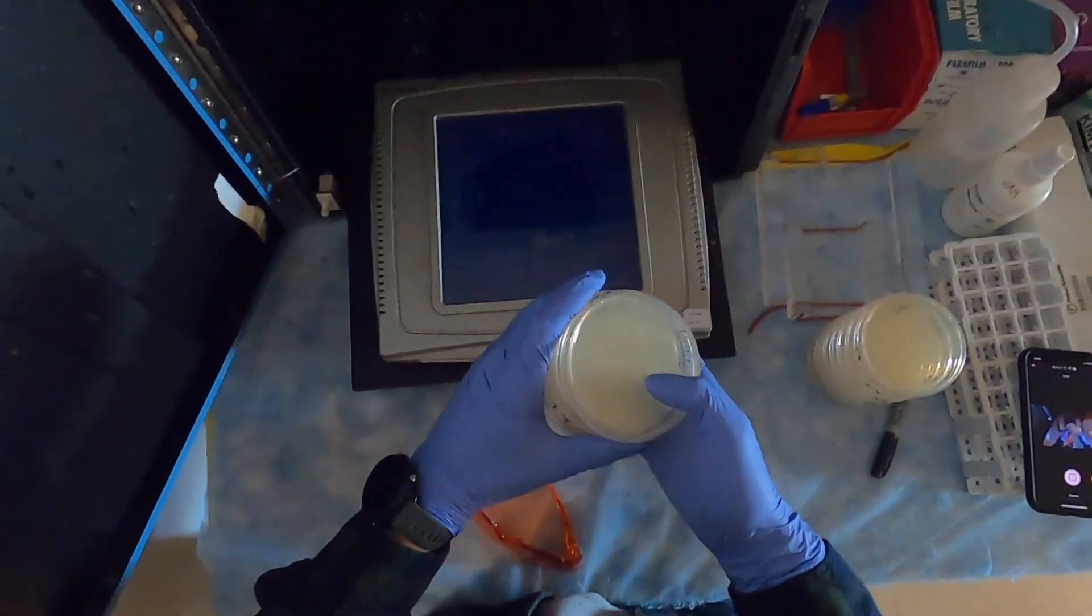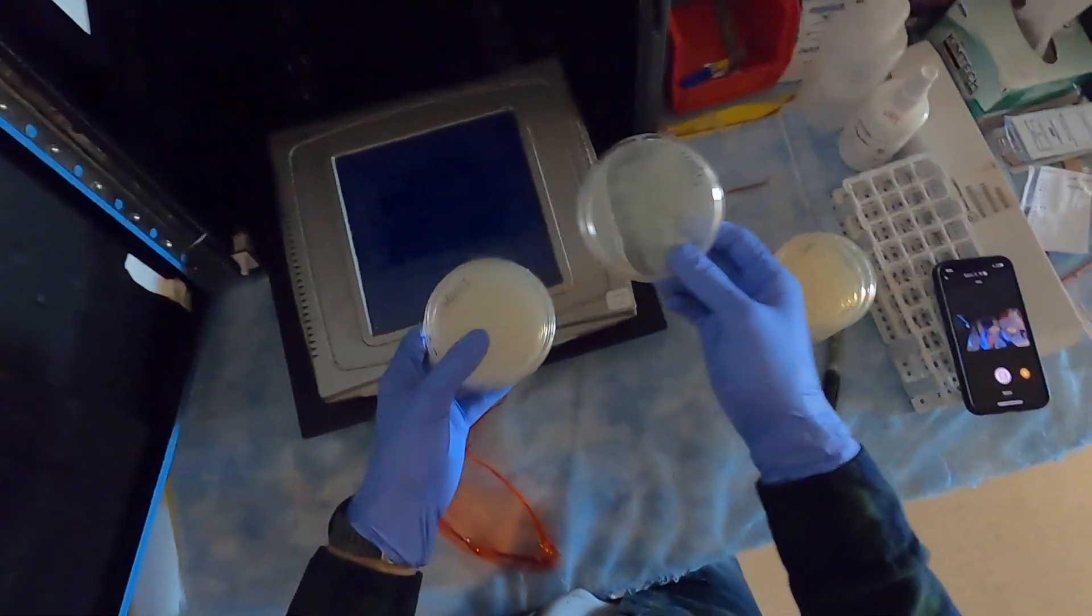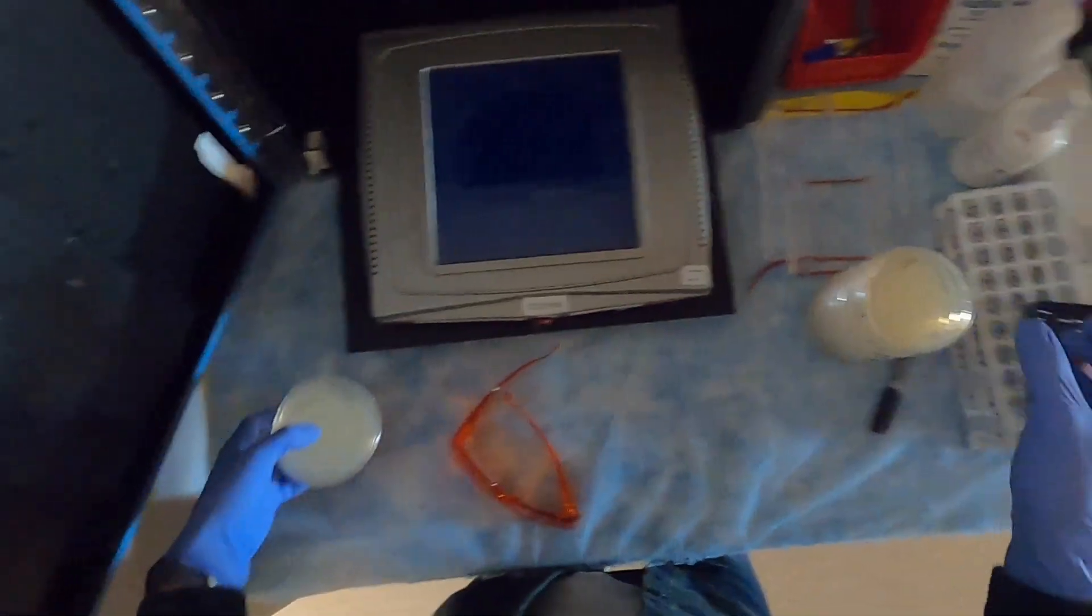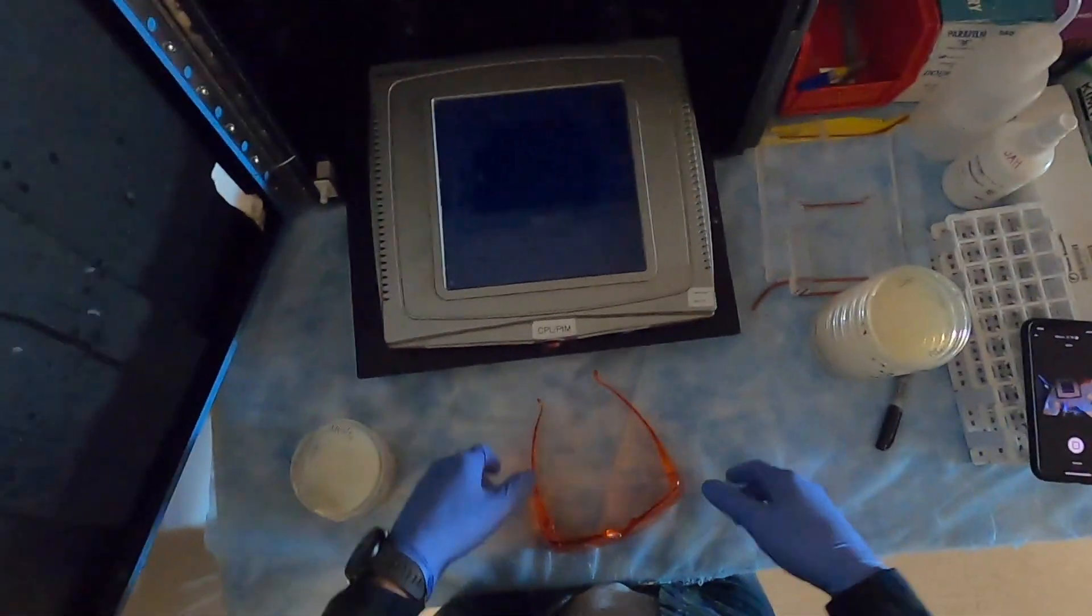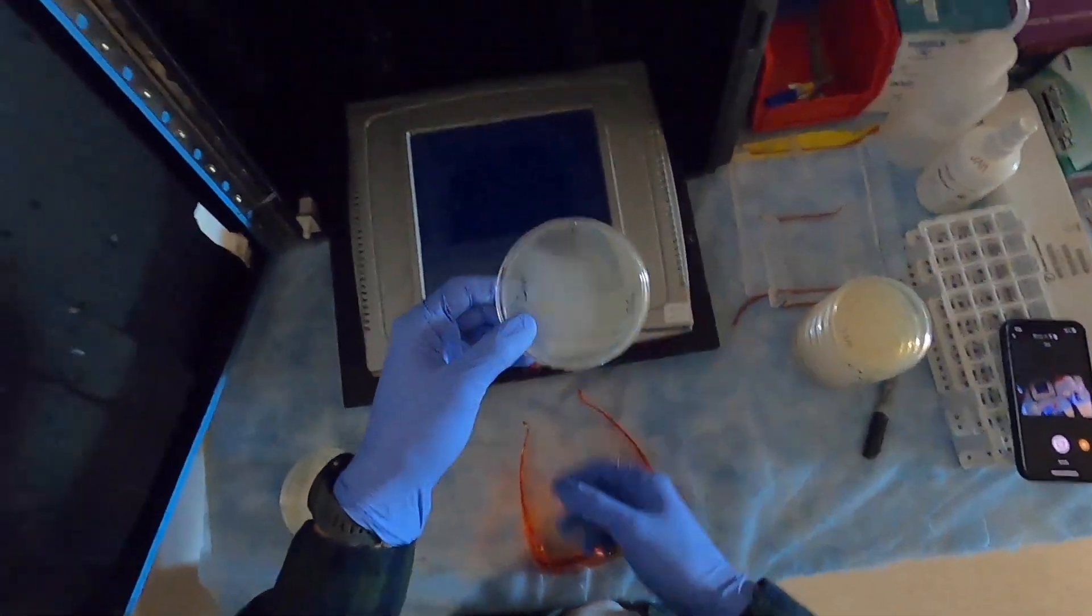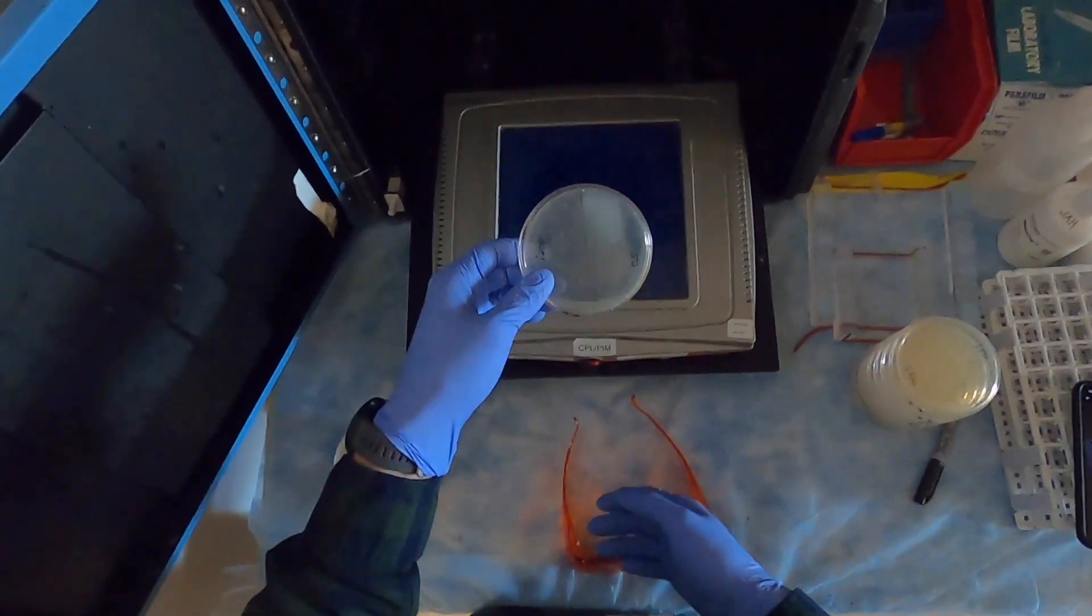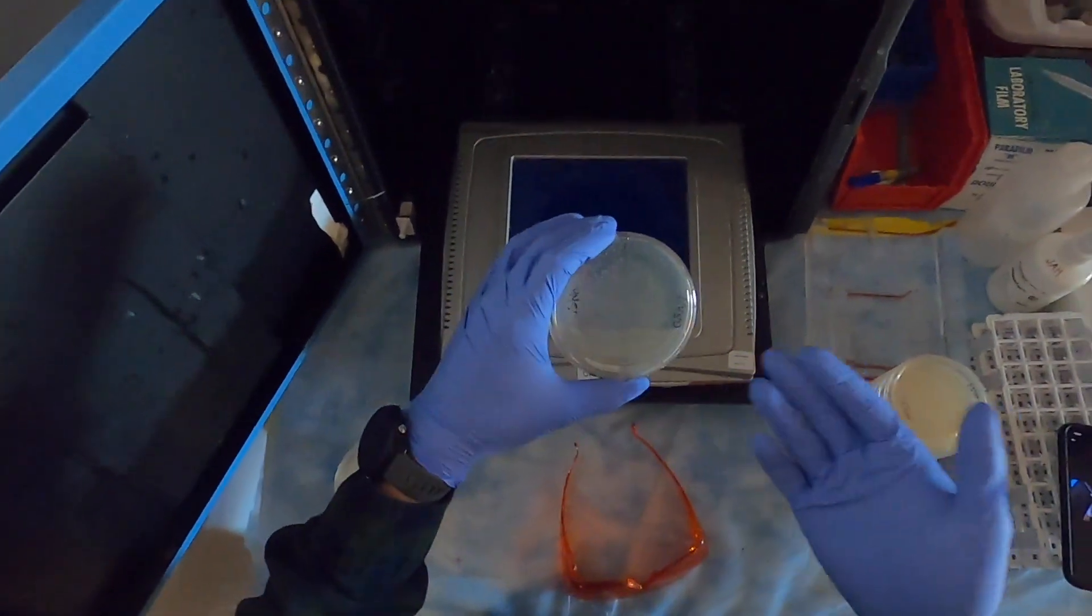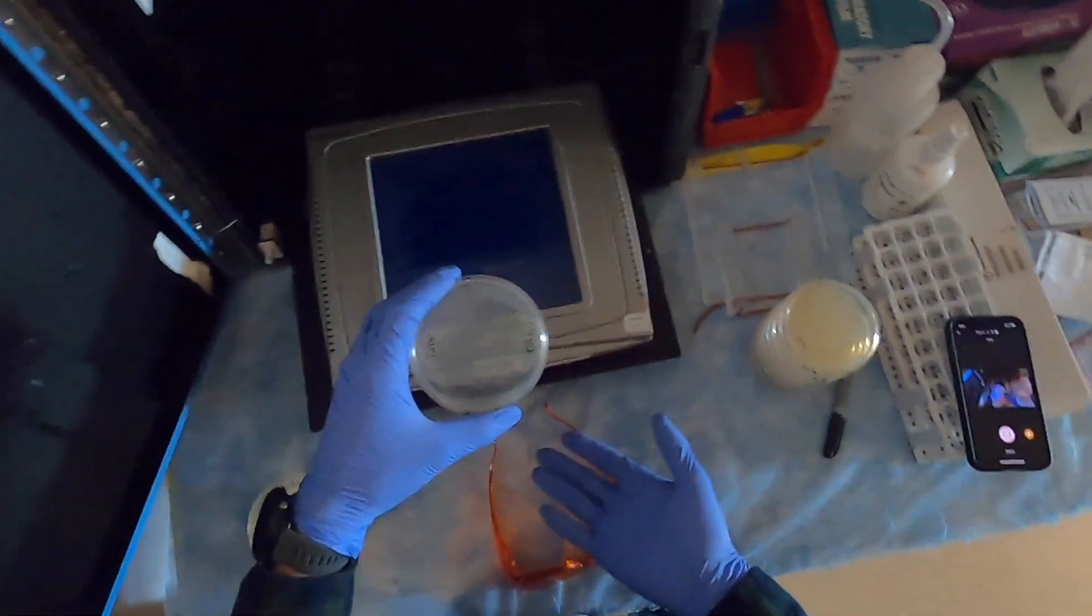Now, it'll be easier to see in the light, but these colonies are just about big enough now for us to pick into liquid media. We have this nice green-white screening system set up in our vectors so that we know to select white colonies off of these plates into liquid media and avoid the green ones.